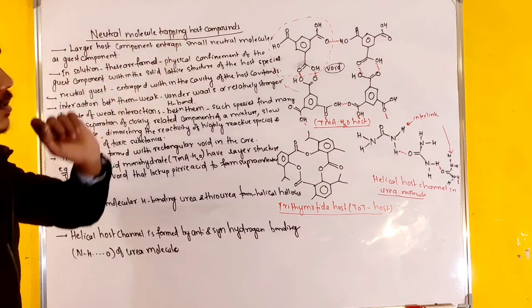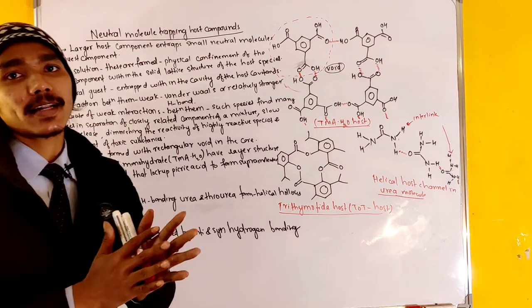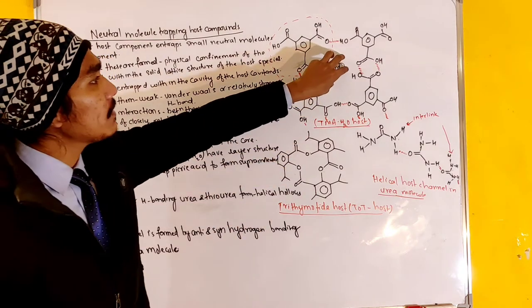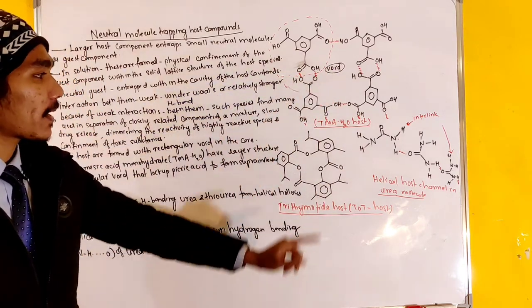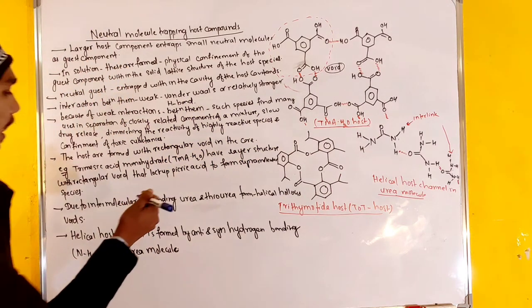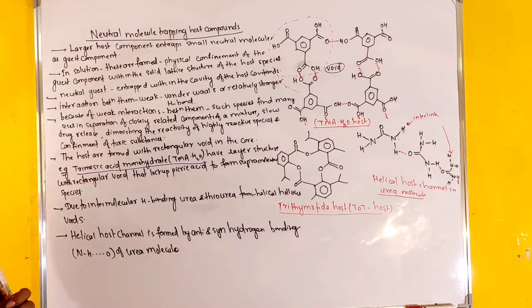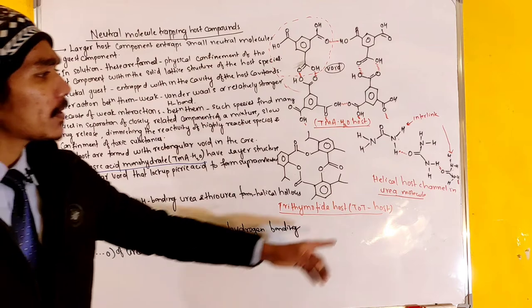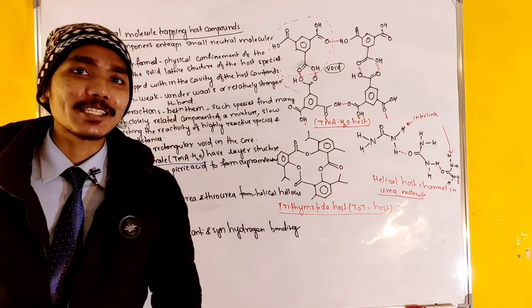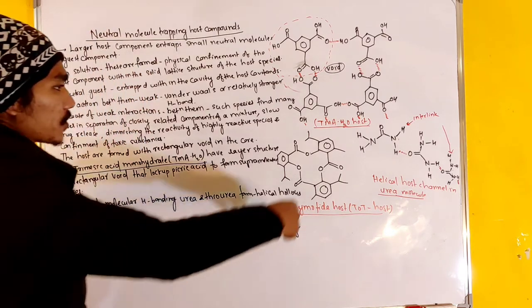As a neutral molecule trapping host compound, the molecules could be in the lattice space. This void space in the lattice brings you this void. This family, the TMA trimesic acid monohydrate TMA S2O, this hydrated substance is in the family.